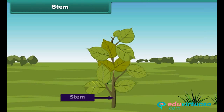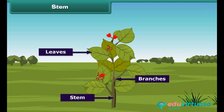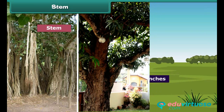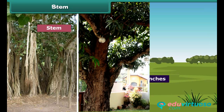Now let's learn about the stem. The stem is the green or brownish part of the plant that grows above the ground. It provides support to the plant and bears branches, leaves, flowers and fruits. In young plants, the stem is usually green, but over time it turns brown. Some trees like banyan and mango have a hard, strong and brown stem called a trunk.